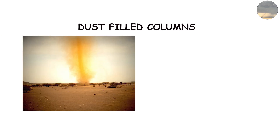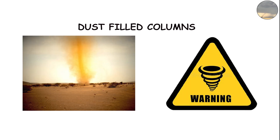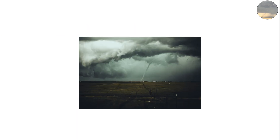But landspouts can still pack strong winds capable of damaging property and flipping vehicles. They often appear as thin, dust-filled columns and can form quickly with little warning — a reminder that not all tornadoes fit the same mold.